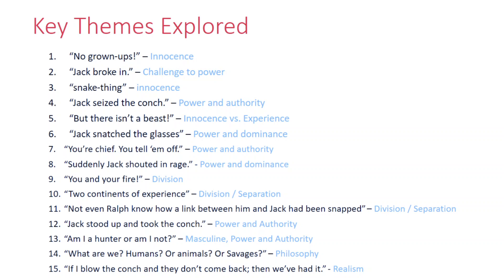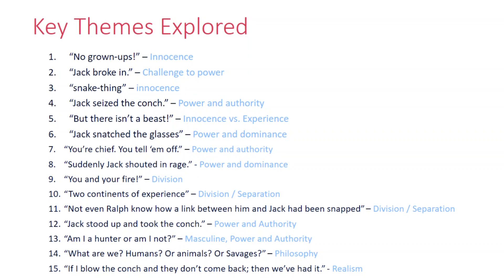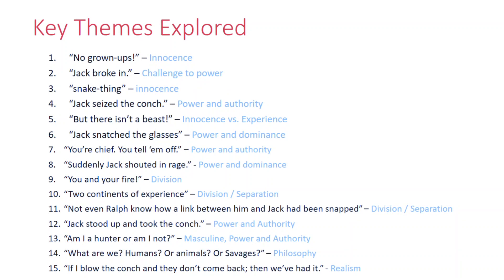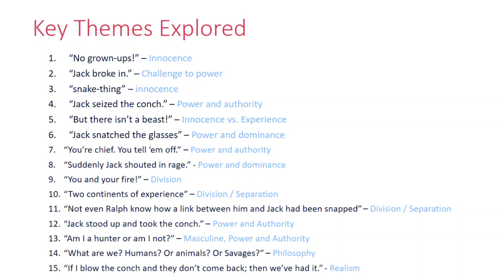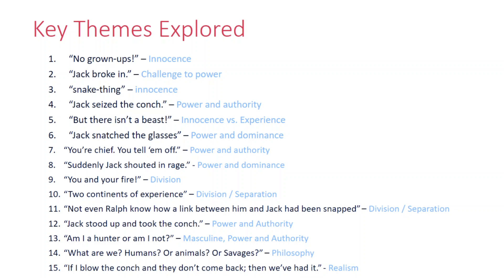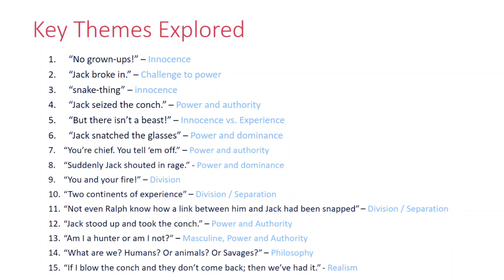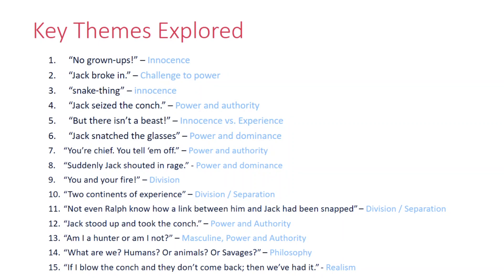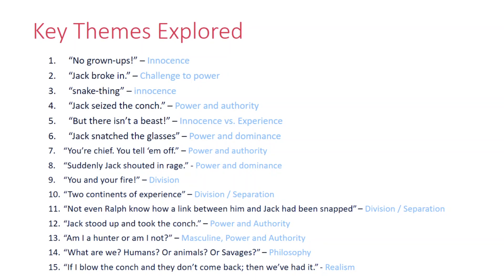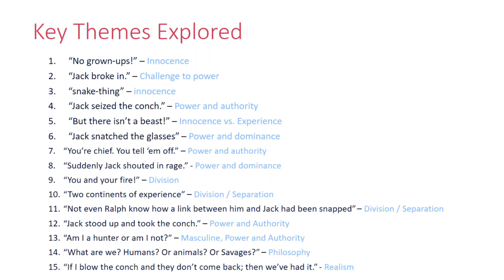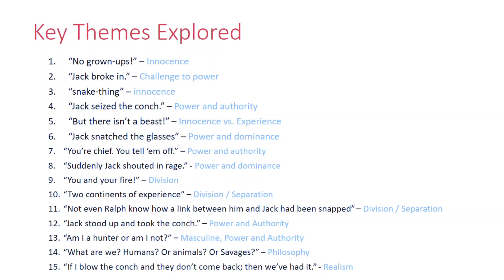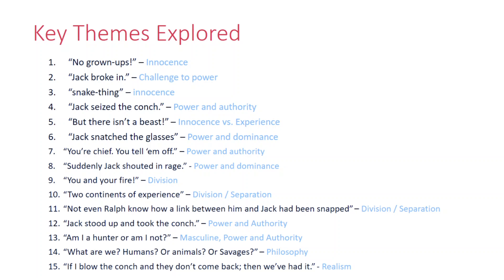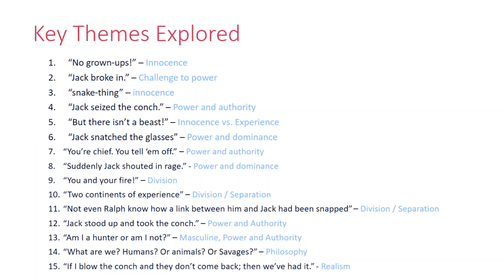One of the other routines I try to get students into very early on is breaking down chapters into key quotes and then thinking about key themes that they connect to. We can use a range of these quotes to discuss a range of different themes, characters or ideas presented in the novel. It's good practice to get students to pick out between 10 and 15 quotes from each chapter and start to use those, relating them to different themes as part of their routine revision at home.